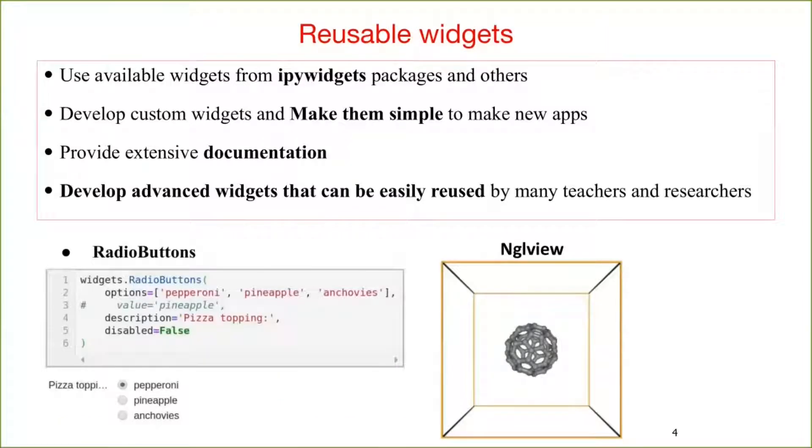We use Python as a programming language and Jupyter as a programming environment. The widgets are core for the interactions. We use the available widgets from the ipywidget package. For instance, slider, drop-down, and text area buttons. The figure on the left shows radio buttons from ipywidget. We also use other packages. For example, we use the nglview as a molecule visualizer which is shown on the right. We also develop our own custom widgets. We make them simple to make new applications.